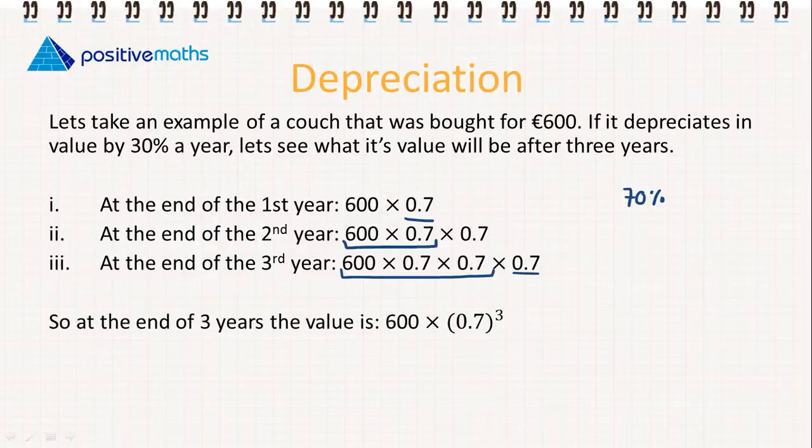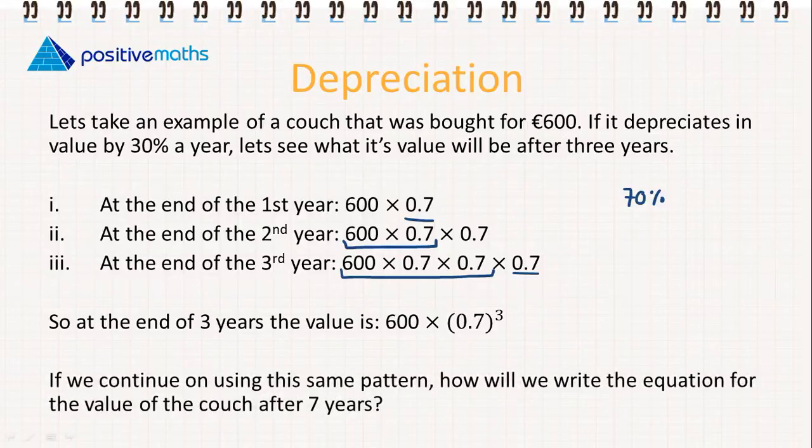So at the end of three years, the value is 600 × (0.7)³. If we continue with the same pattern, how would we write the equation for the value of the couch after seven years? We notice that the power 3 is the number of years, so after seven years the value is 600 × (0.7)⁷.